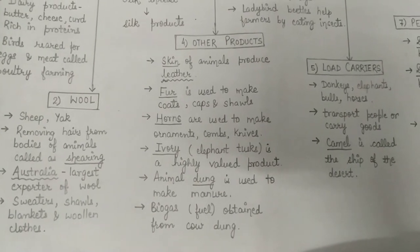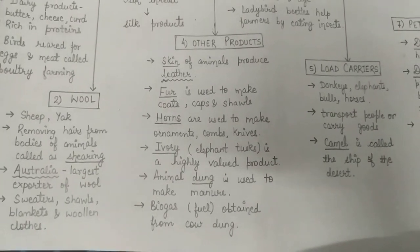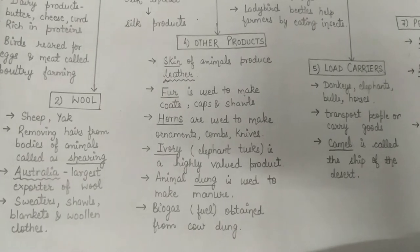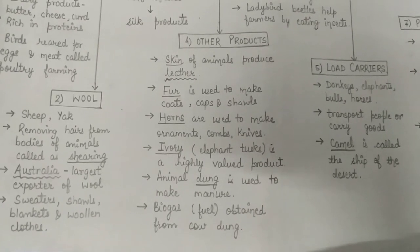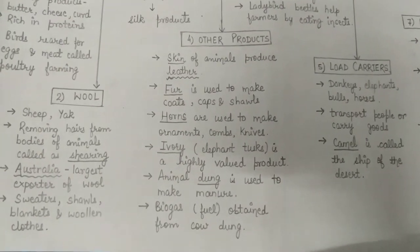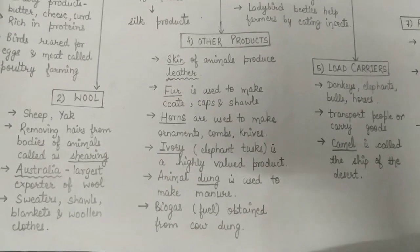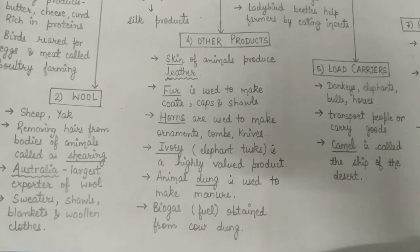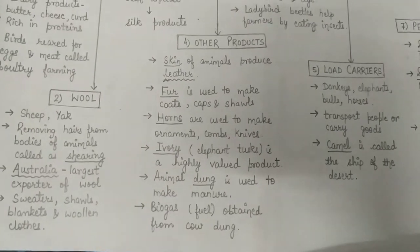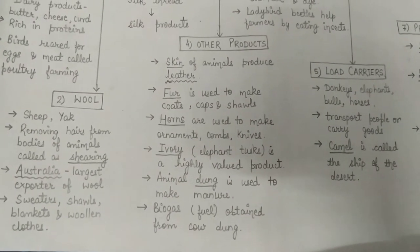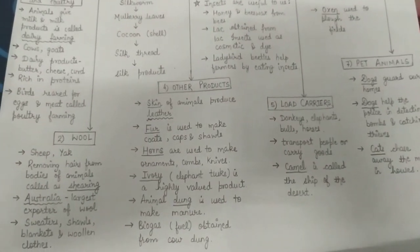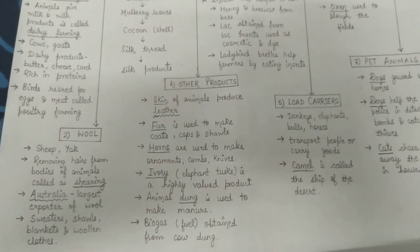Woolen yarn basically means thread. We prepare thread from the thick hairs of animals like sheep and yak. From this thread, or woolen yarn, we make sweaters, shawls, blankets, and woolen clothes. These woolen clothes are made from the woolen yarn — the thread we get from these animals after shearing.